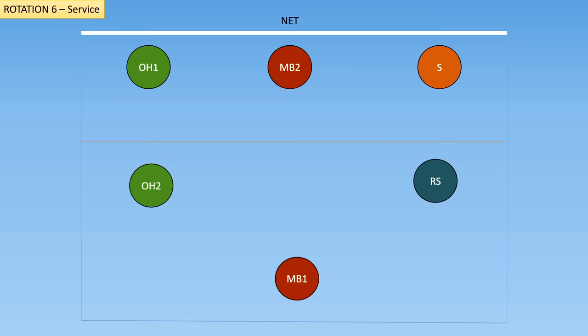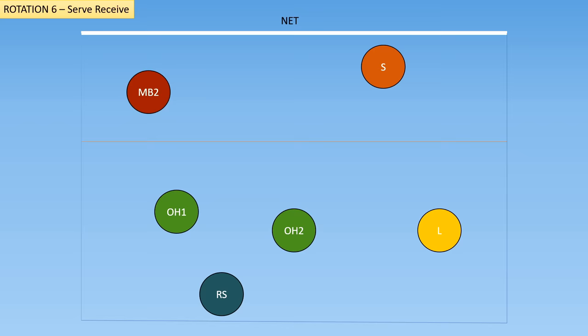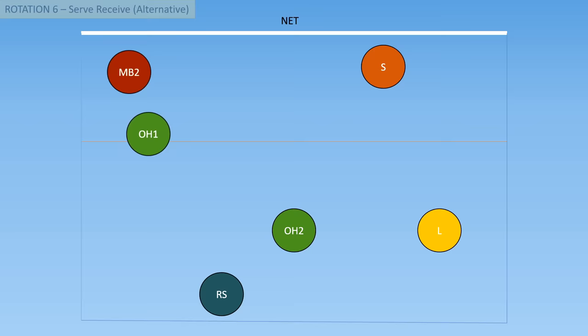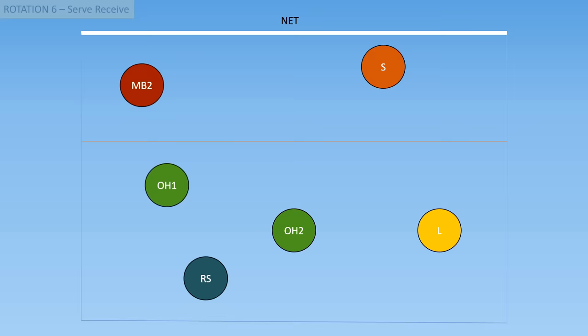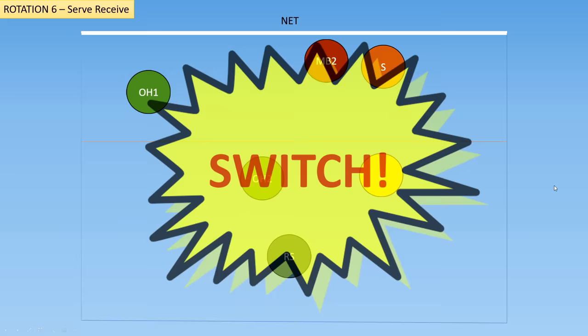Now we've lost the point. We are in serve-receive for rotation 6. The libero can come back in for the middle back, and we're going to hide the right-sided hitter again. The outside hitter can drop back to pass — again, not passing to the left of the middle back or behind the outside hitter. The setter can get to their position. As an alternative, if you wanted the right-sided hitter to pass, you could have these players stacked in the top left and the right side comes up to pass. The ball will come over to the libero, goes to the setter, the middle hits, everybody covers. Now we switch, and everybody gets into base positions.